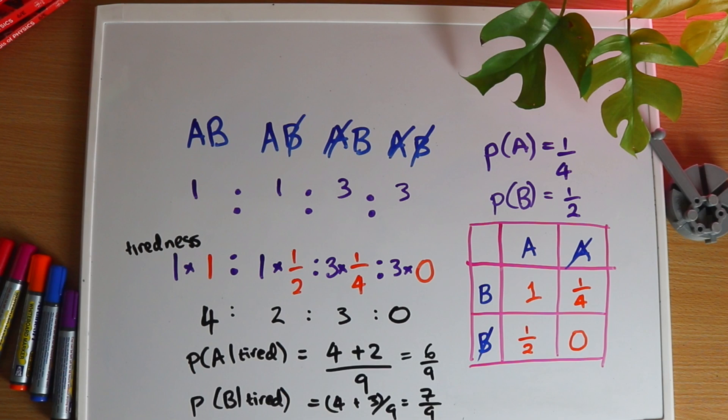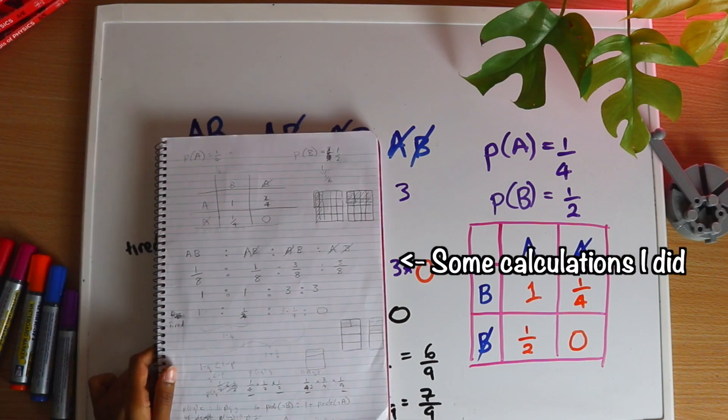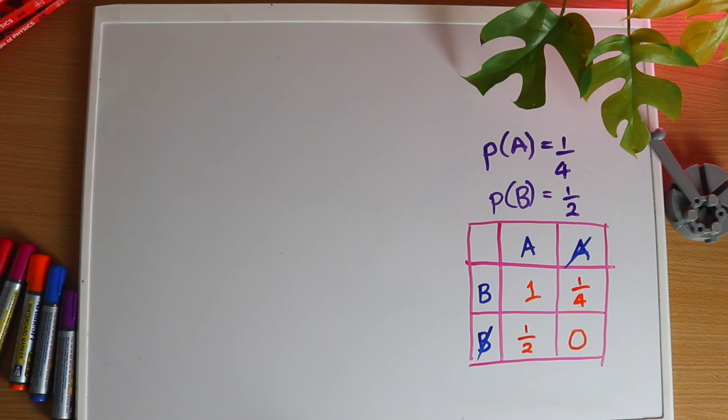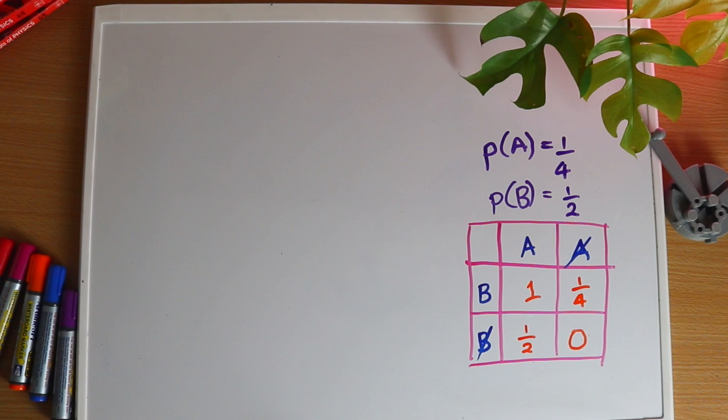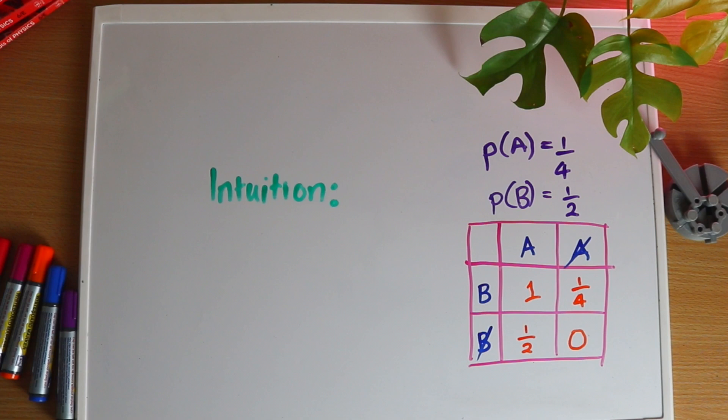When I wrote this example, I tried to rig the numbers so that both A and B would end up equally likely, so I was really surprised to see that it didn't work out that way. Last night I spent ages trying to get some intuition for why, and tried to figure out how you could easily tell which disease was going to be the more common one without having to do all this calculating. I couldn't figure it out though, so guess what? That's homework.